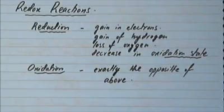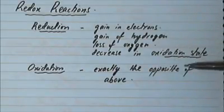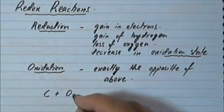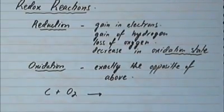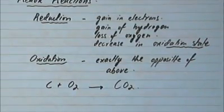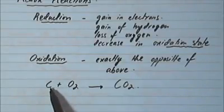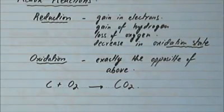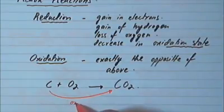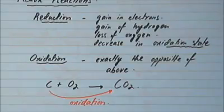Let's look at some examples of how each of these terms applies. One very simple example is carbon gaining oxygen by reacting with it — this is called a combustion reaction and it produces carbon dioxide. Carbon had no oxygen initially, but later two oxygens were added. A gain of oxygen is called oxidation, so carbon is getting oxidized.